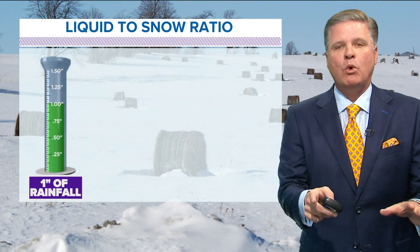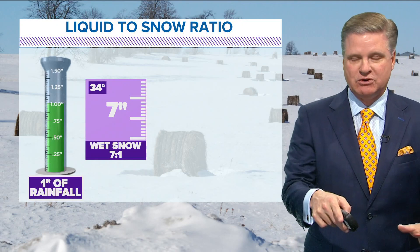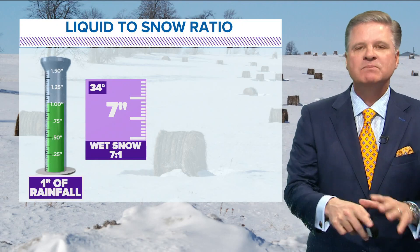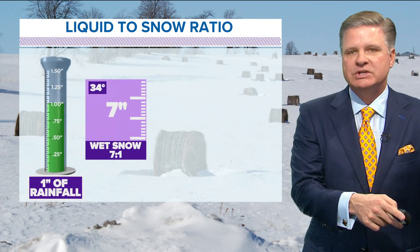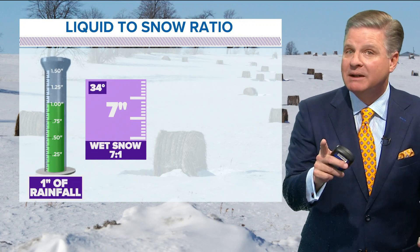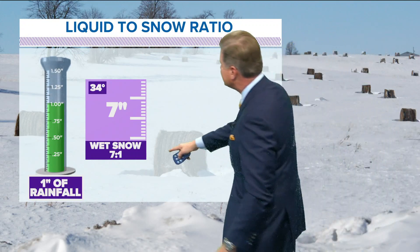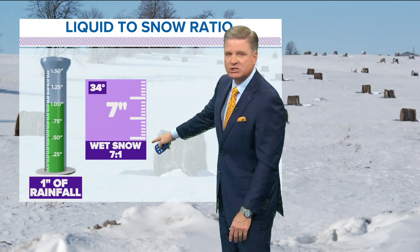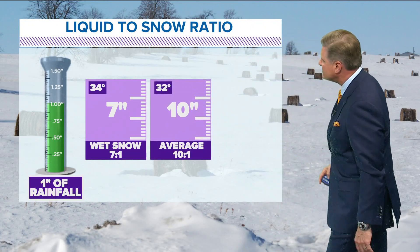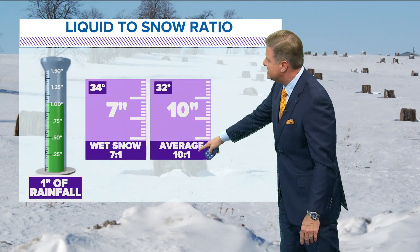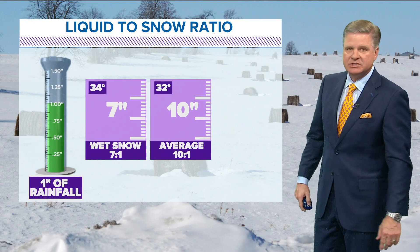Remember, one inch of rainfall — it all has to do with the air temperature at the time of snowfall. The general rule is 10 to one: one inch of rain equals 10 inches of snow. But that's different when it's 34 degrees — you have a seven-to-one ratio, a wet snow, that would be seven inches. We didn't have that. That's the average — the 10 to one at 32 degrees. You get one inch of water, you get 10 inches of snow.